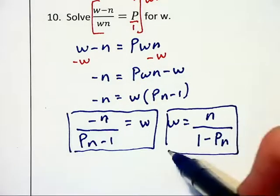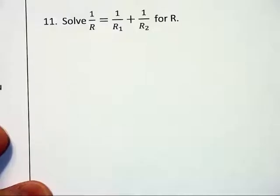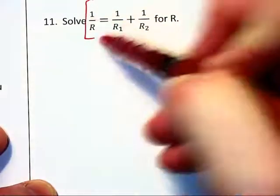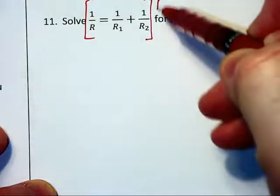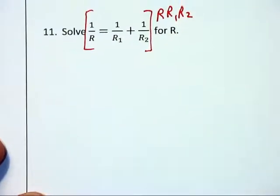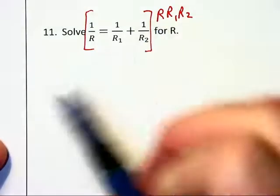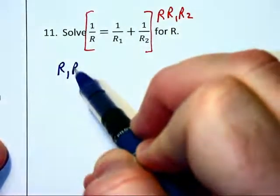On number 11, the least common denominator that we're going to multiply through by is R, R1, R2. And we're going to be very careful how we do our cancellation. On the left only the R cancels so we have 1 times R1, R2.